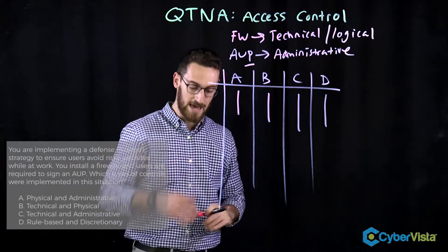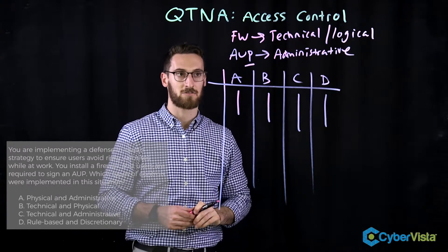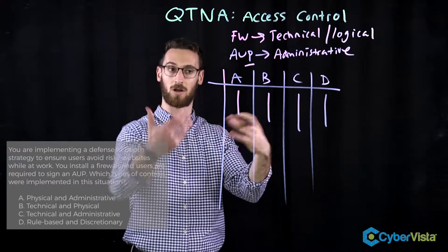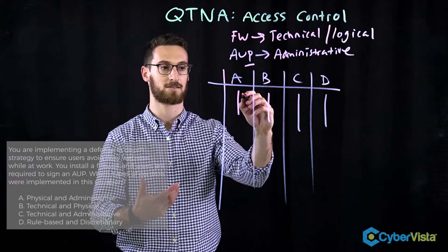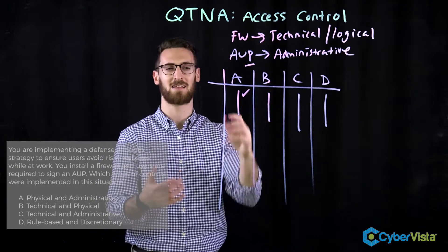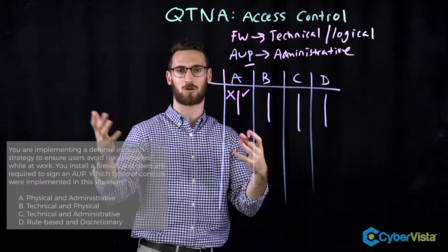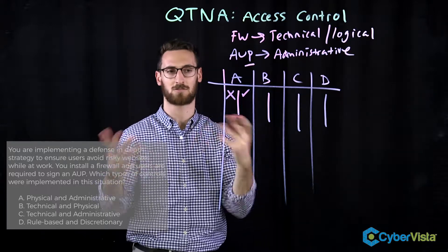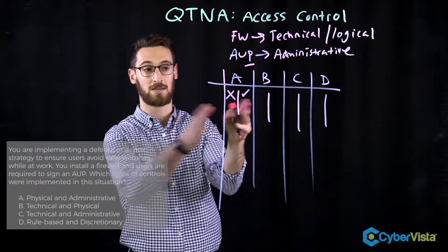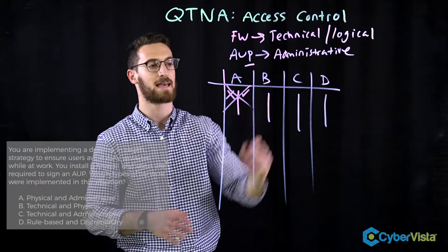Let's look at A: physical and administrative. It got one half right, because the AUP is administrative, but it's not a physical control. Physical control would be like a guard, a fence, or lights — something like that. So even though one half is right, A is not right.